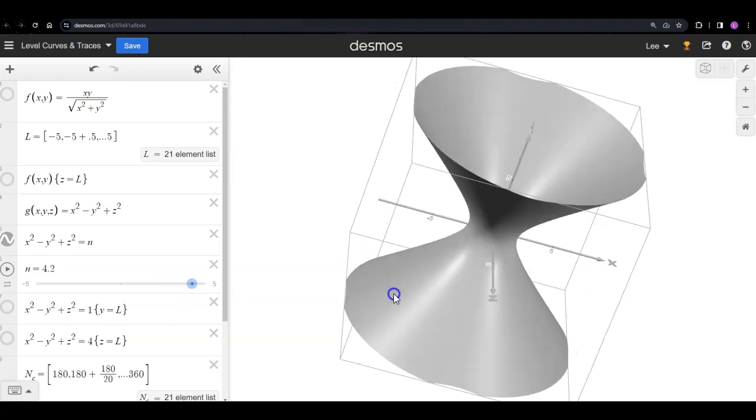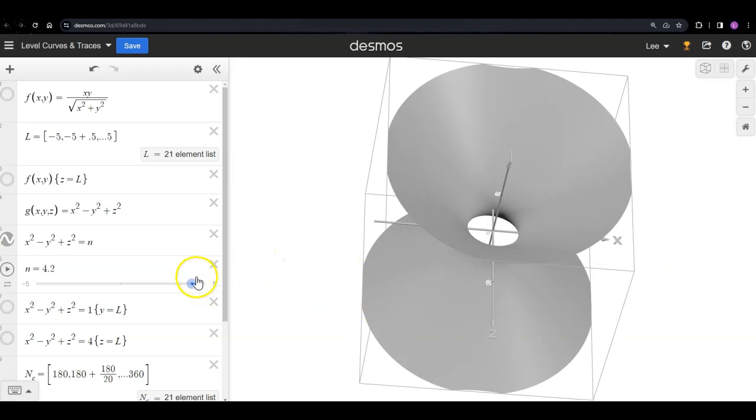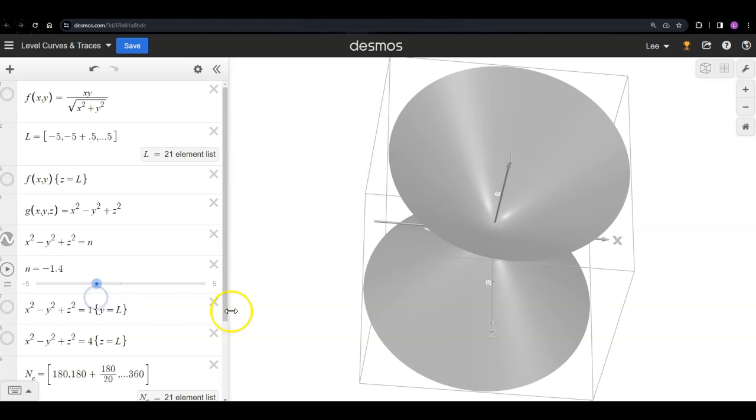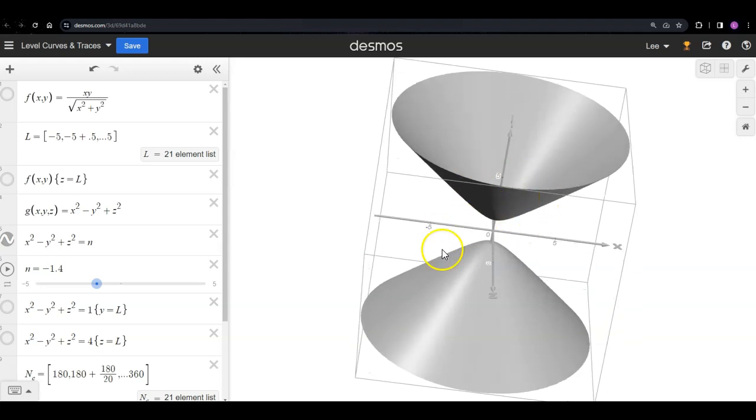If I want to kind of rotate this around, you might get a better view of what's going on. So we have sort of this hyperboloid one sheet. It's going to go down as I get to one, that hole's going to close in, form a cone. And then I should be getting, with the negative values, now a hyperboloid of two sheets.